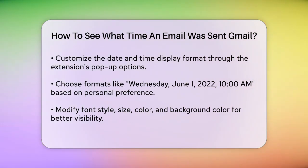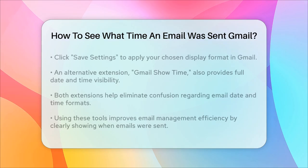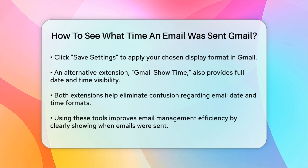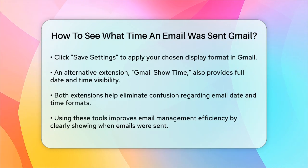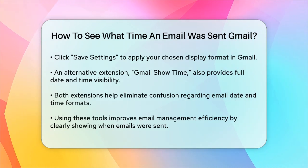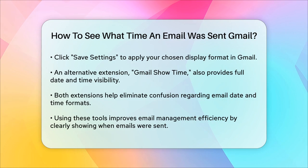Once you've made your selections, click Save Settings at the bottom of the pop-up. Now, your Gmail inbox will display the date and time of your emails in the exact format you chose, eliminating any confusion.